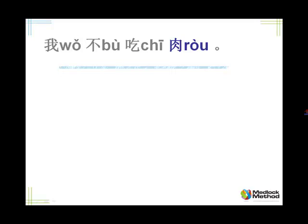Let's start off with some of the various meats. Obviously many people across the world have a taboo against pork. The Chinese for pork is 猪肉 (zhū ròu) — literally 'pig meat.' 猪肉. Tell me: I don't eat pork. 我不吃猪肉.